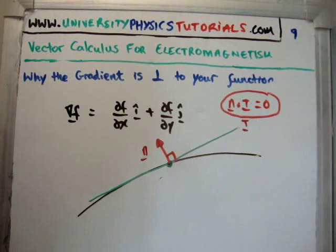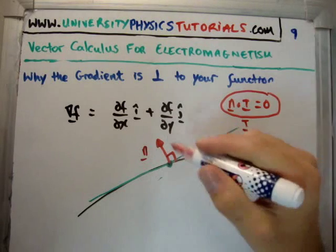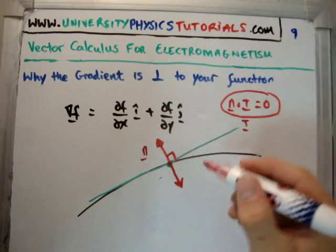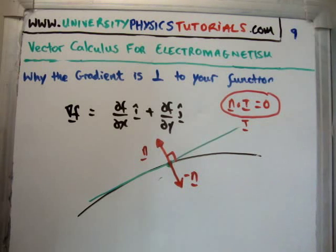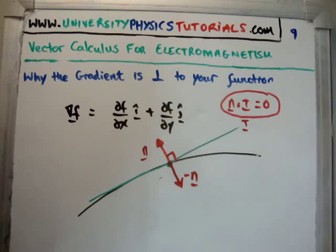Note, of course, we actually have two normal vectors. This is an equally valid normal vector. We call this minus n. Now, which direction you call positive and which you call negative is completely up to you, provided you're consistent with your signs.